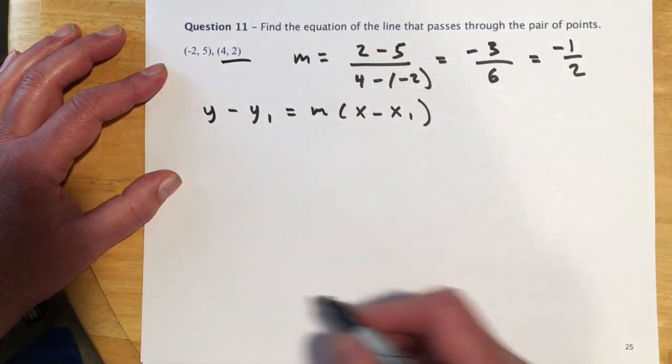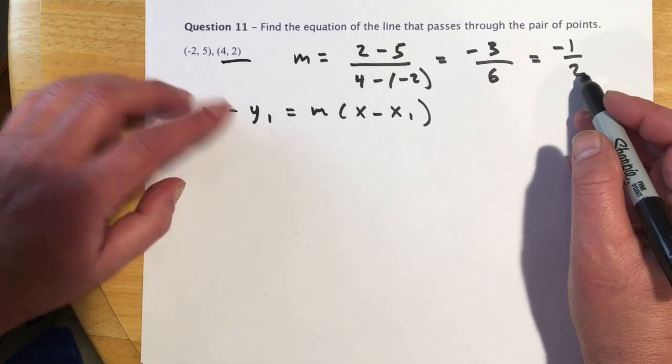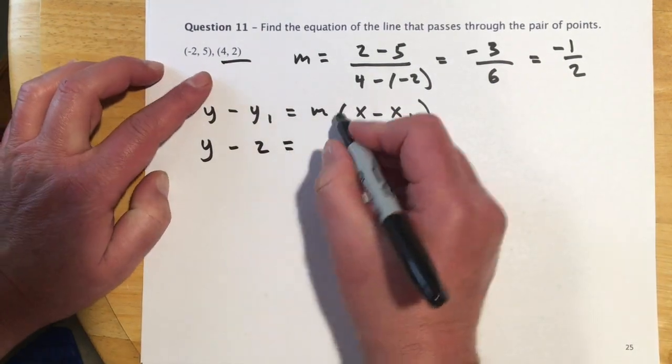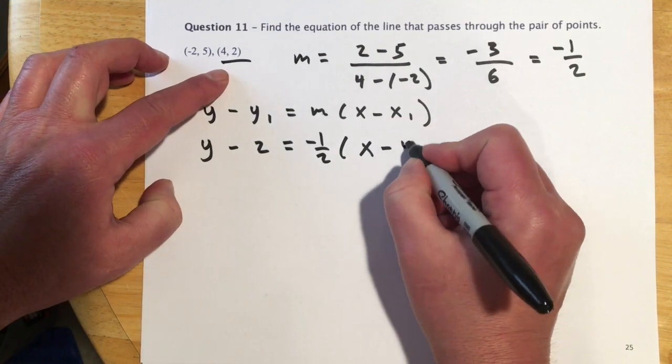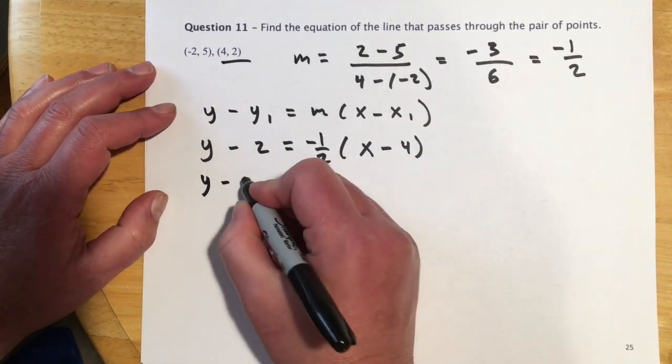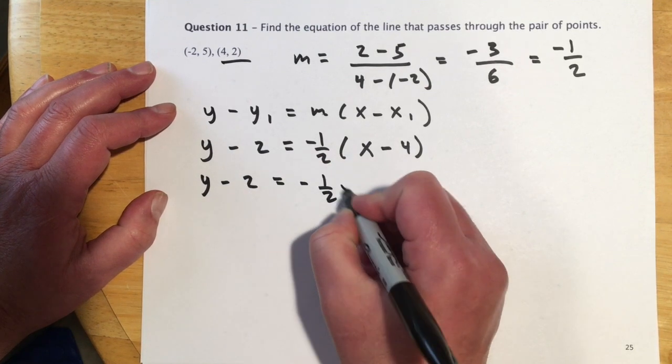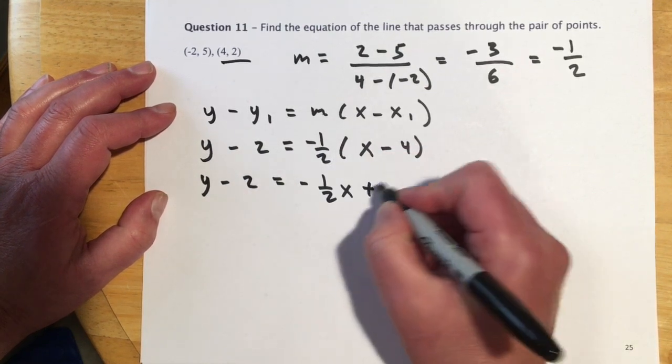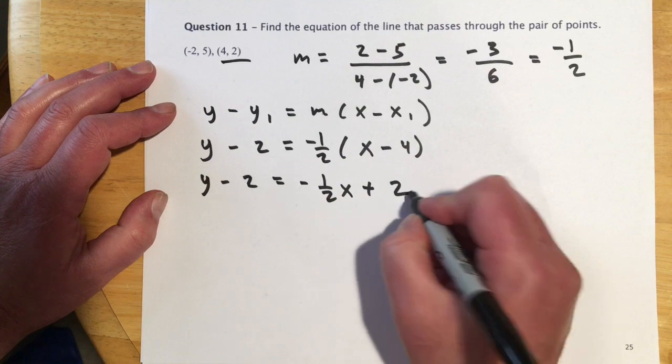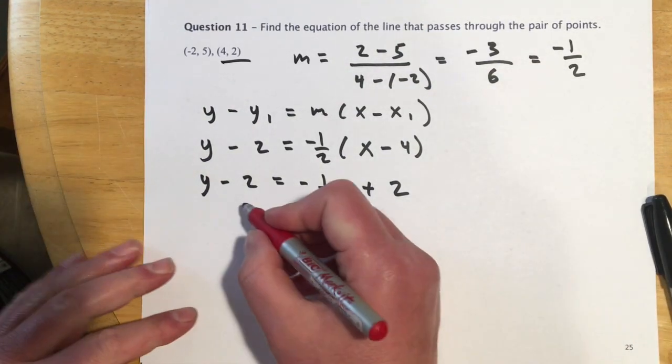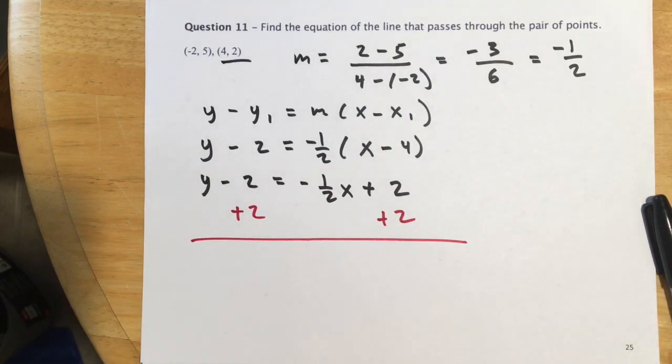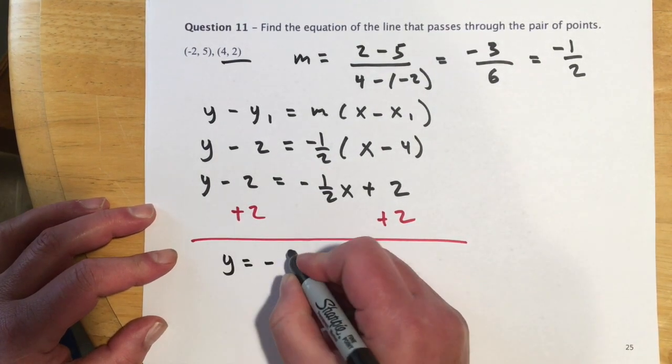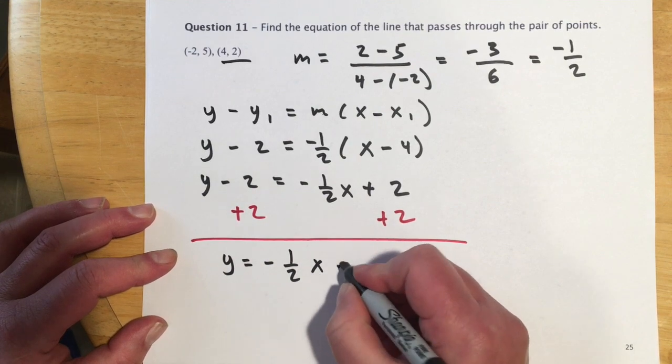Which is the point-slope formula. And so I'm going to use the one without the negative sign just because it looks easier. So y minus 2 equals m is negative 1 half. And then x minus 4. And I'll run that 1 half through. Negative and negative makes positive. And 4 divided by 2 would make 2. So a little bit nicer numbers than the last one. And then add the 2 over. And then y equals negative 1 half x plus 4.